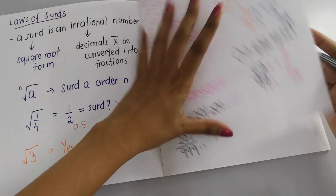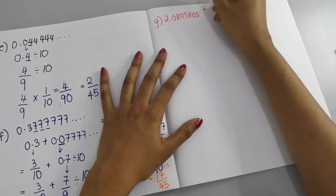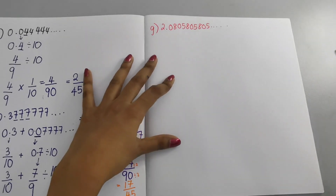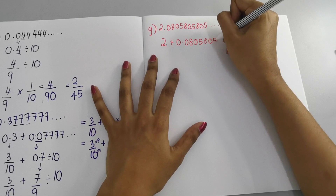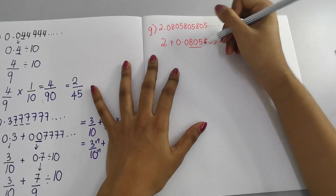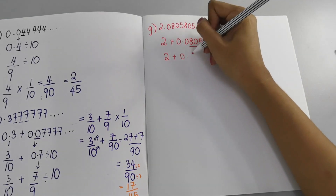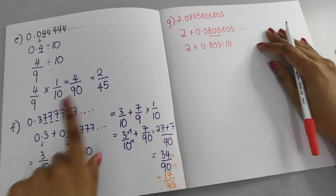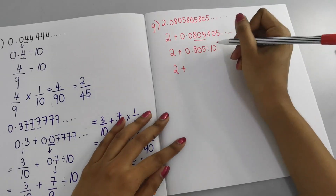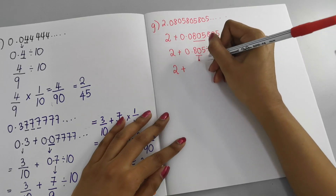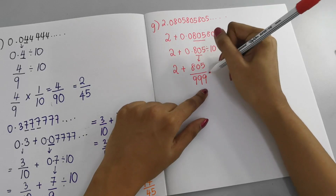For the last example (g): 2.08058058... — the repeating block is 805. However, there is a 0 before 805 starts repeating, so we write 2 plus (0.805 ÷ 10). Since 805 is the three-digit repeating block, we write 805/999. Then divide by 10: so it's 2 + (805/999) ÷ 10.